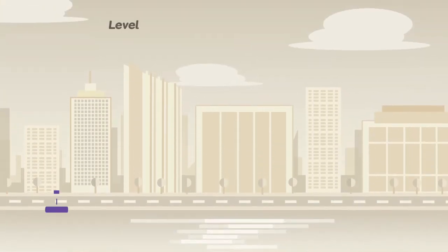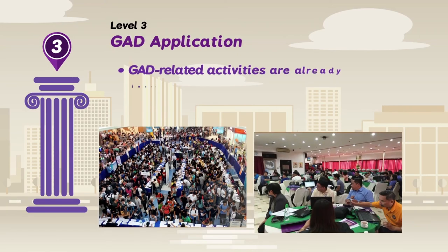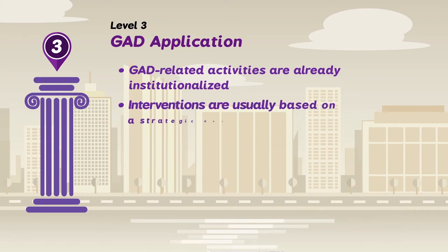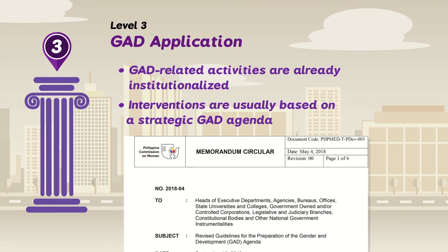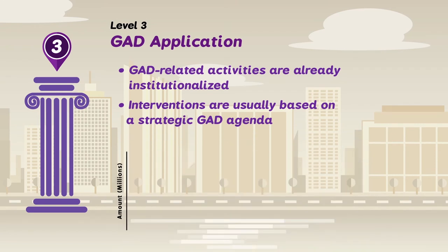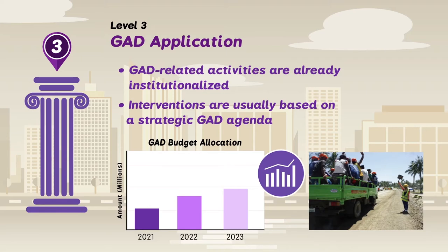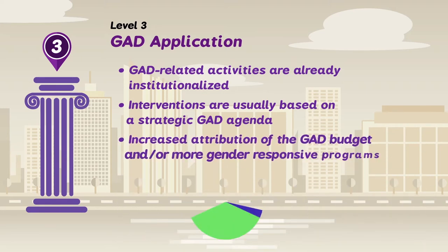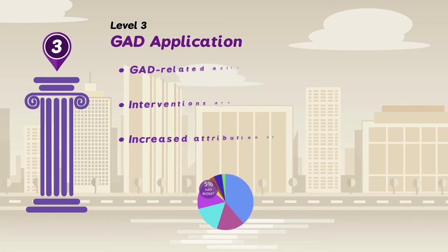Level 3: GAD Application. In this level, GAD-related activities are already institutionalized. Interventions are usually based on a strategic GAD agenda that guides the organization's GAD planning, budgeting, and implementation. The agency's GAD plan and budget is now more strategic, which results in either increased attribution of the GAD budget and/or more gender-responsive programs.